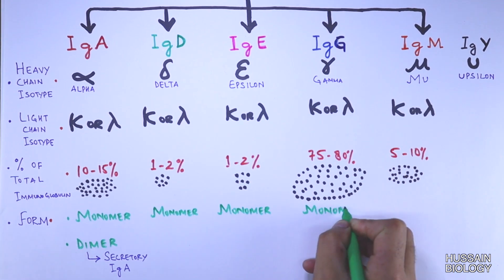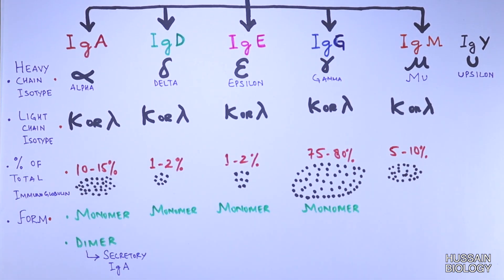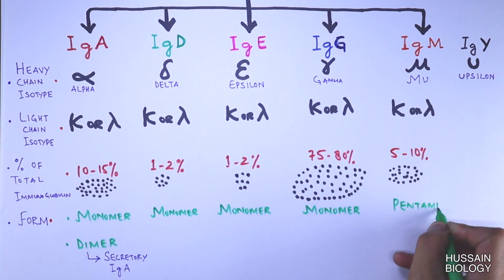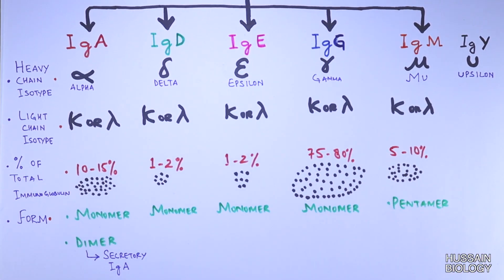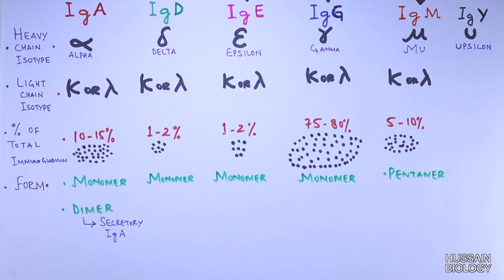occur in monomer form only, whereas IgM mostly occurs in pentamer form but can occur in monomer form as well as it is expressed on plasma membrane of beta lymphocytes as a monomer.